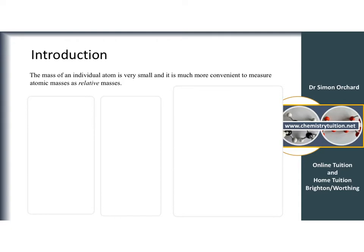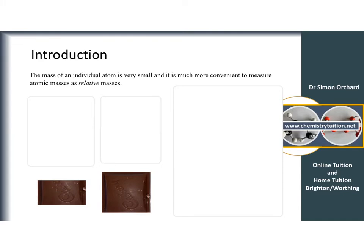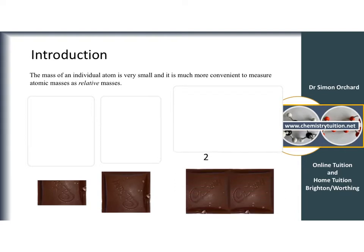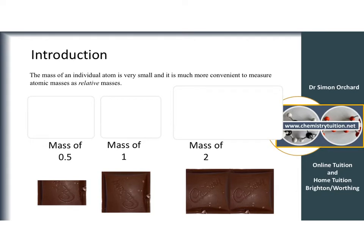One way of explaining this is if I had a piece of chocolate with a mass of 1. If I divided that piece in half it would have a relative mass of 0.5, and if I had two pieces that would have a relative mass of 2. Because it's relative, there are no units — the middle piece has a mass of 1, the double piece is 2, and the half piece is 0.5.